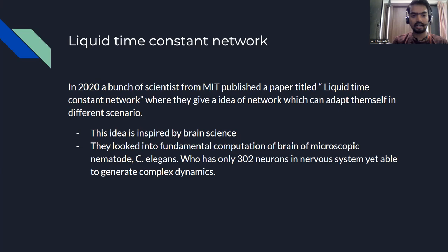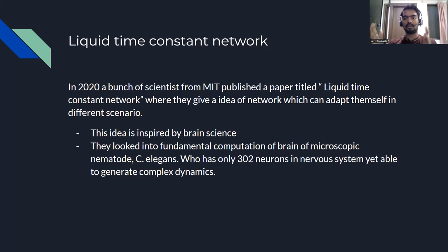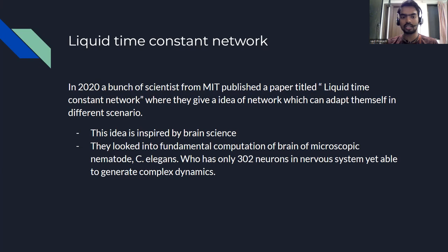Despite having only 302 neurons, C. elegans is able to not only generate complex dynamics but also adapt to a changing environment. Compare this with our neural networks — even with a large number of neurons, we are not able to produce something that can adapt to the environment. But similarly, in the brain of a macroscopic organism, with a very limited number of neurons, they can generate very complex dynamics. There may be some fundamental reason behind this computation, and that is what they tried to look into.